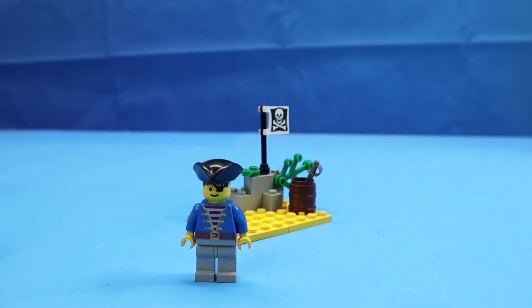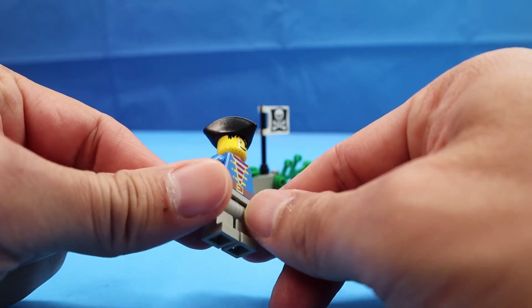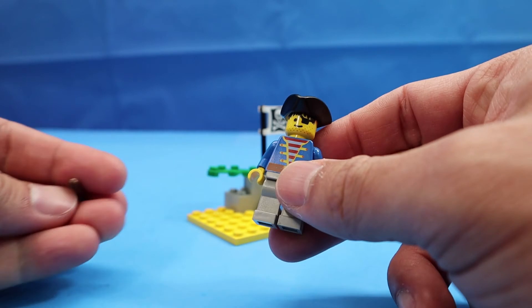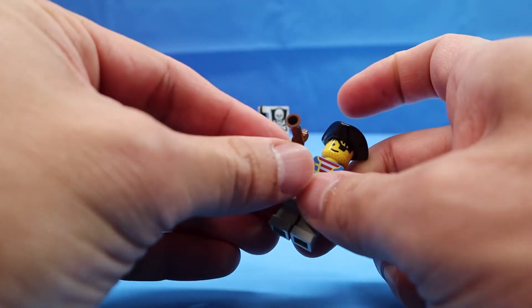Here's the minifig that comes with it. It's a one-eyed pirate with a blue shirt, gray pants. He also has a little flintlock pistol.